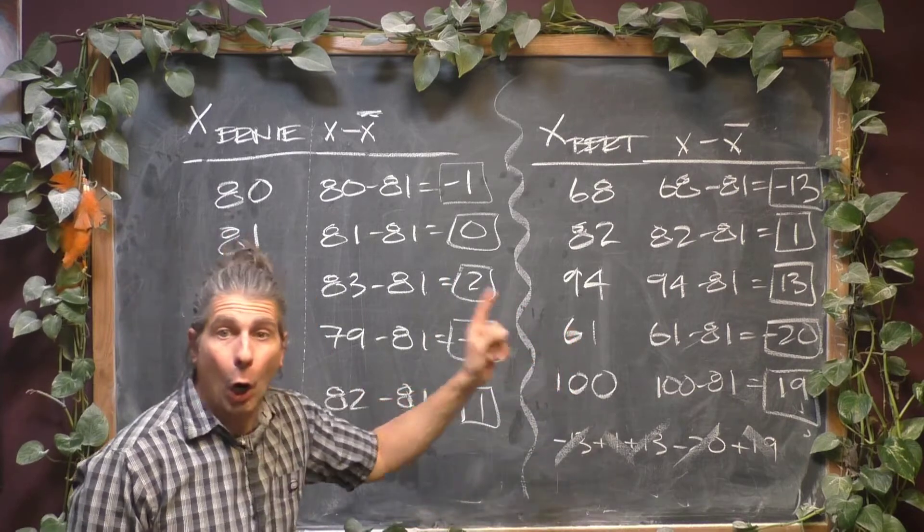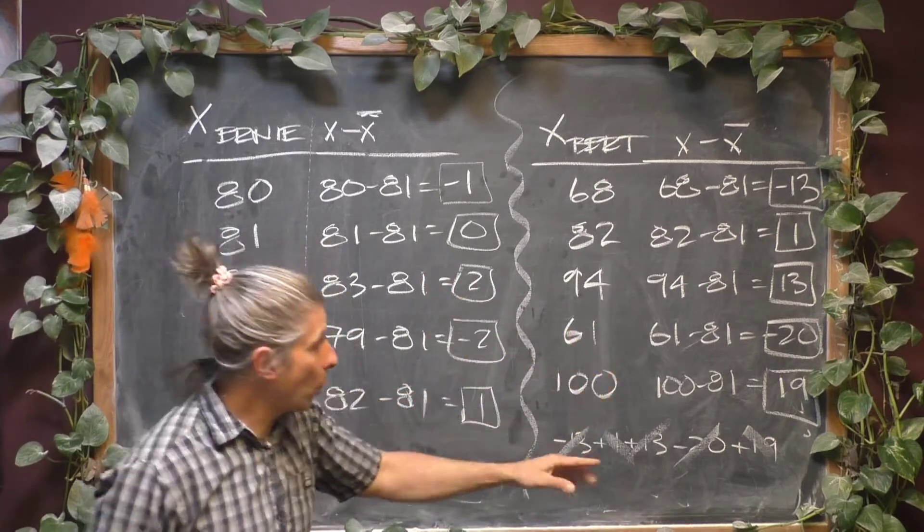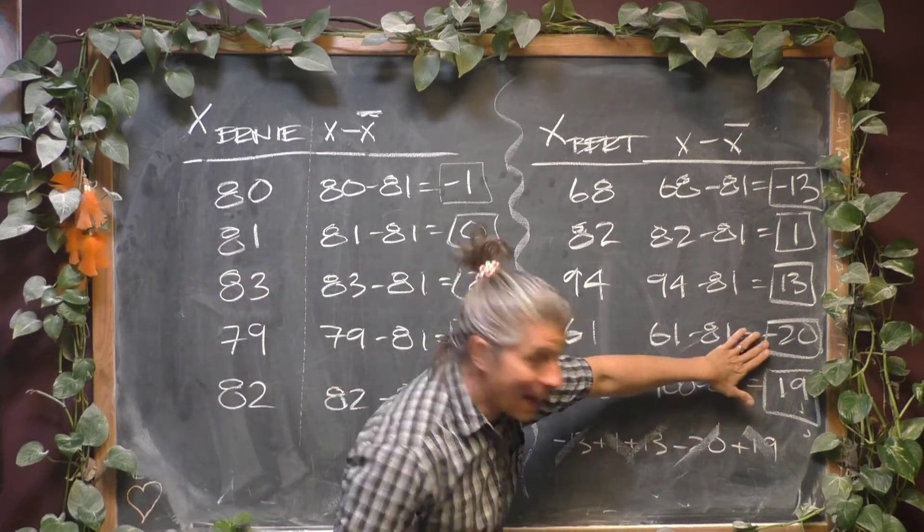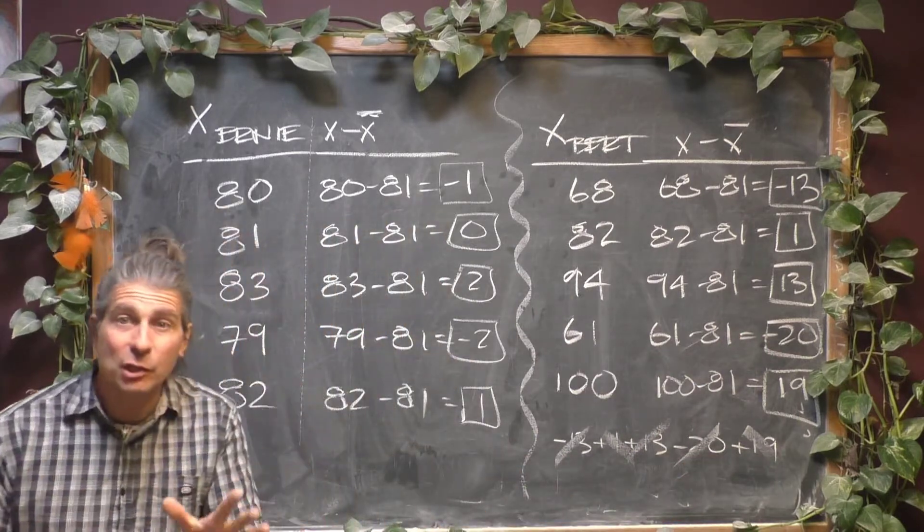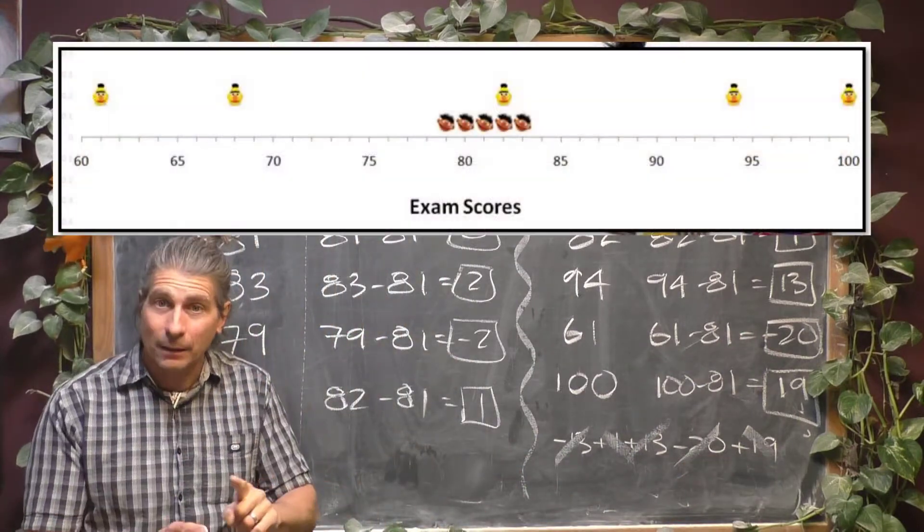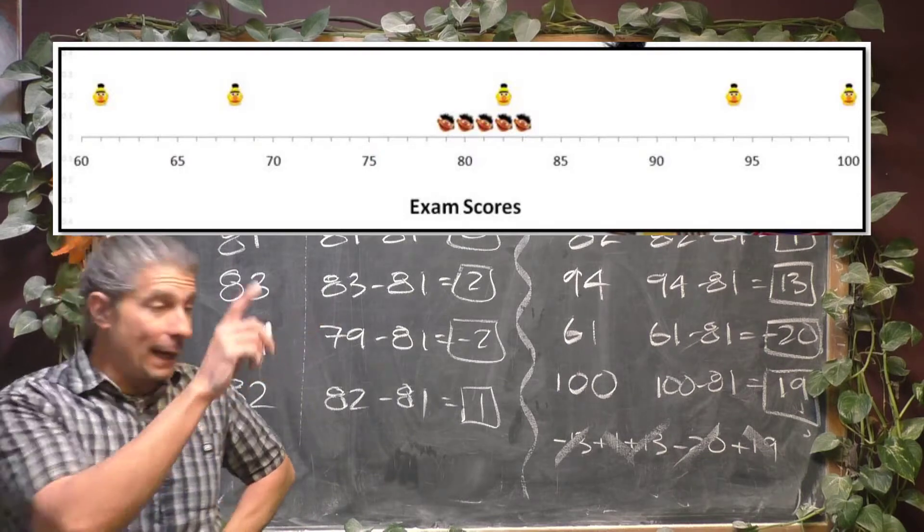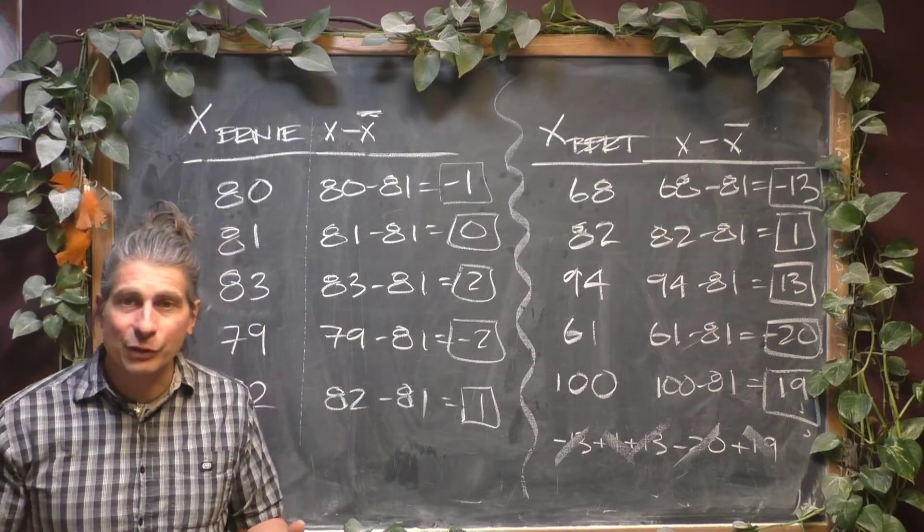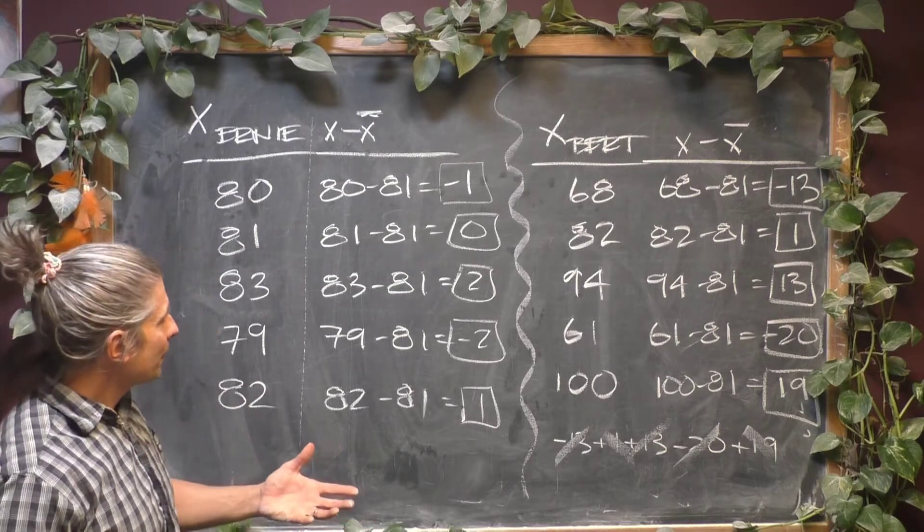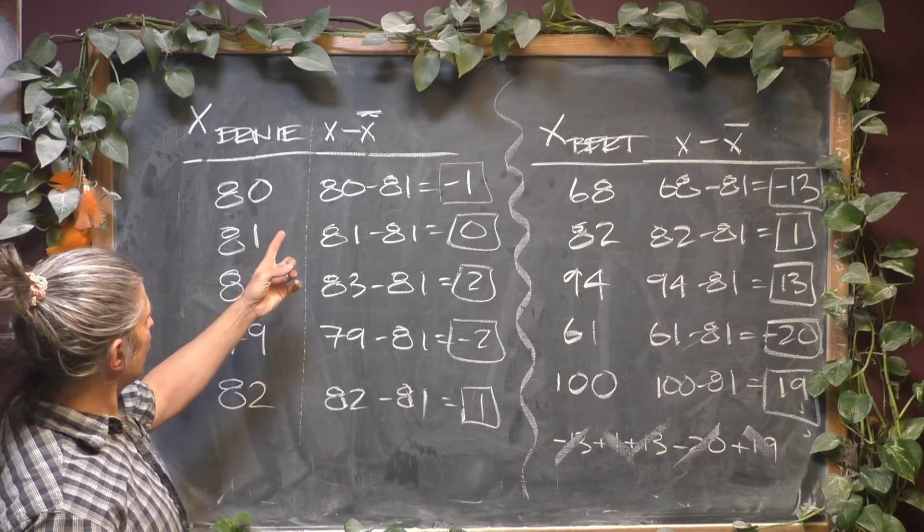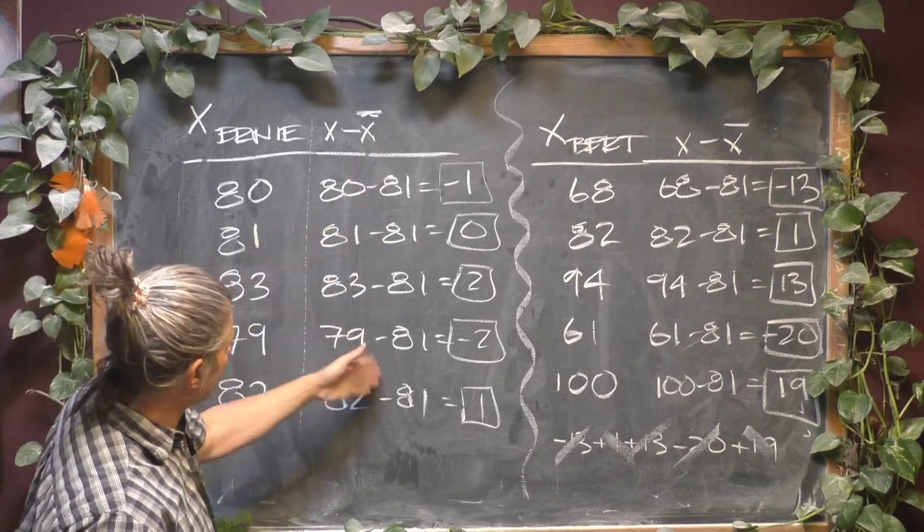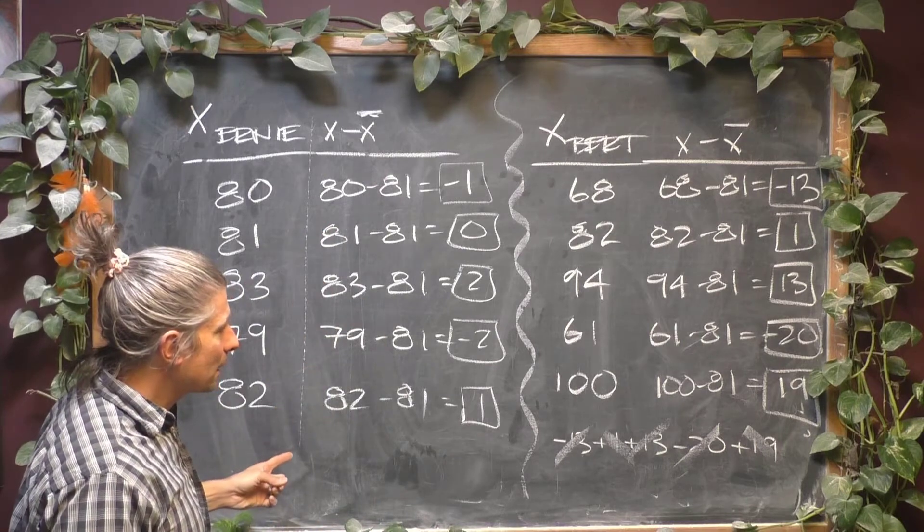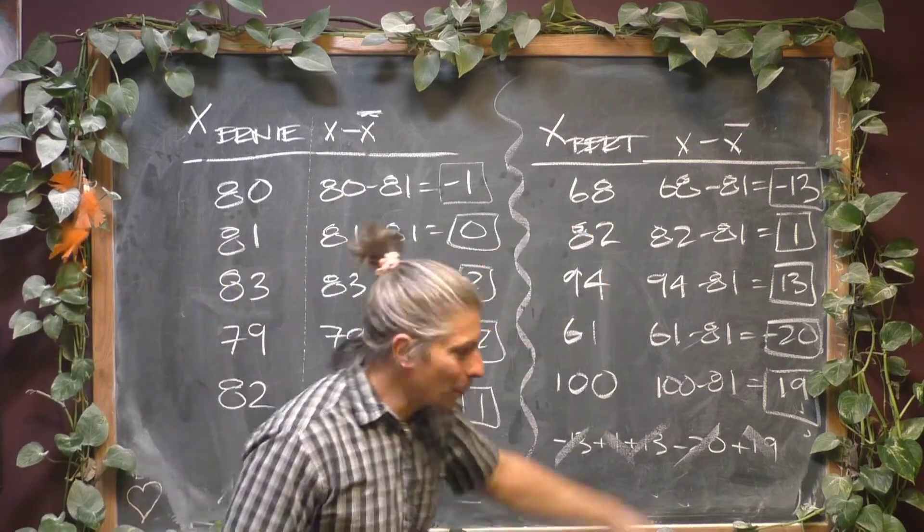Now, Bert's deviations are larger, more positive, and more negative than Ernie's but that makes sense because you remember you noticed that in the previous videos.